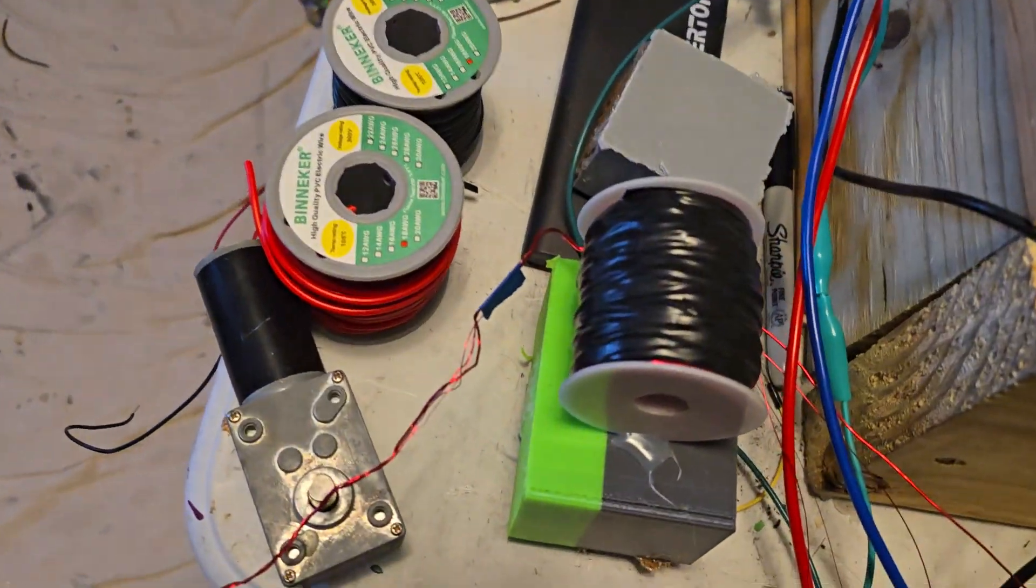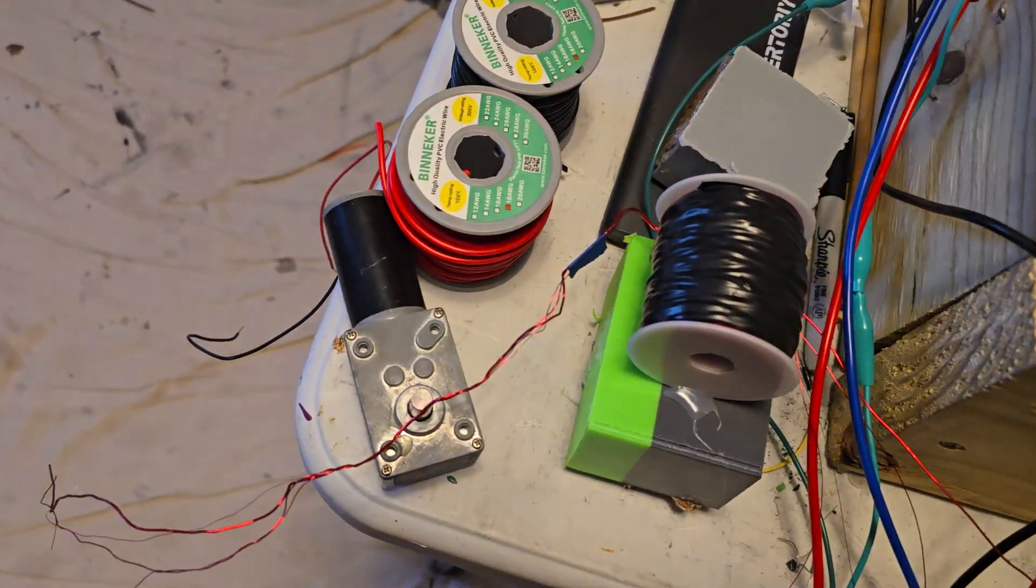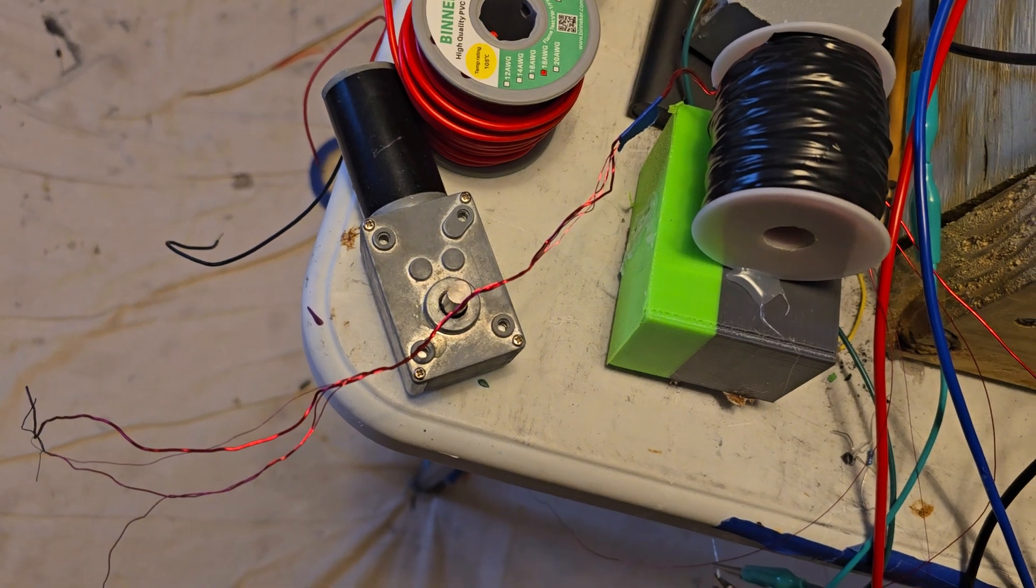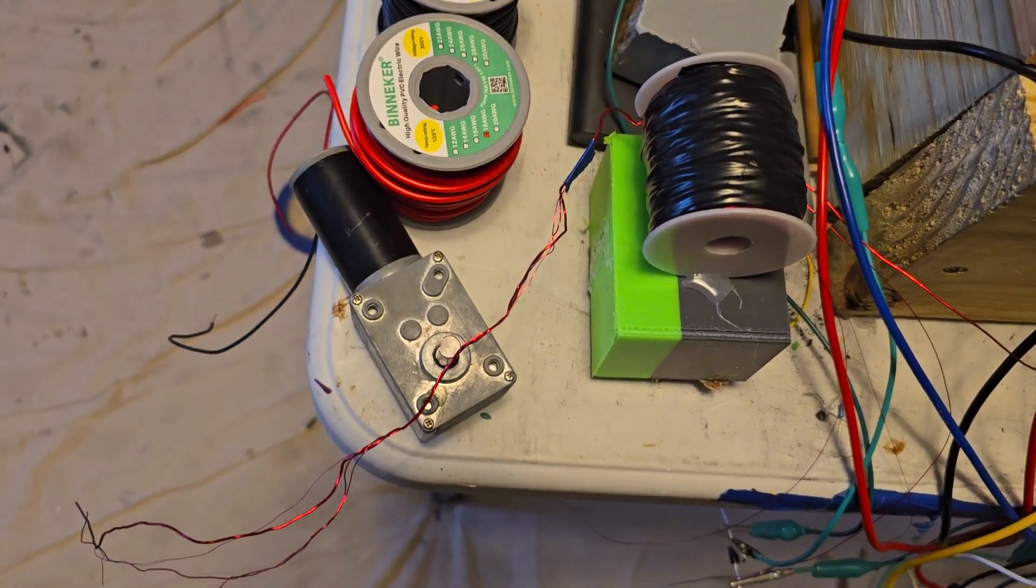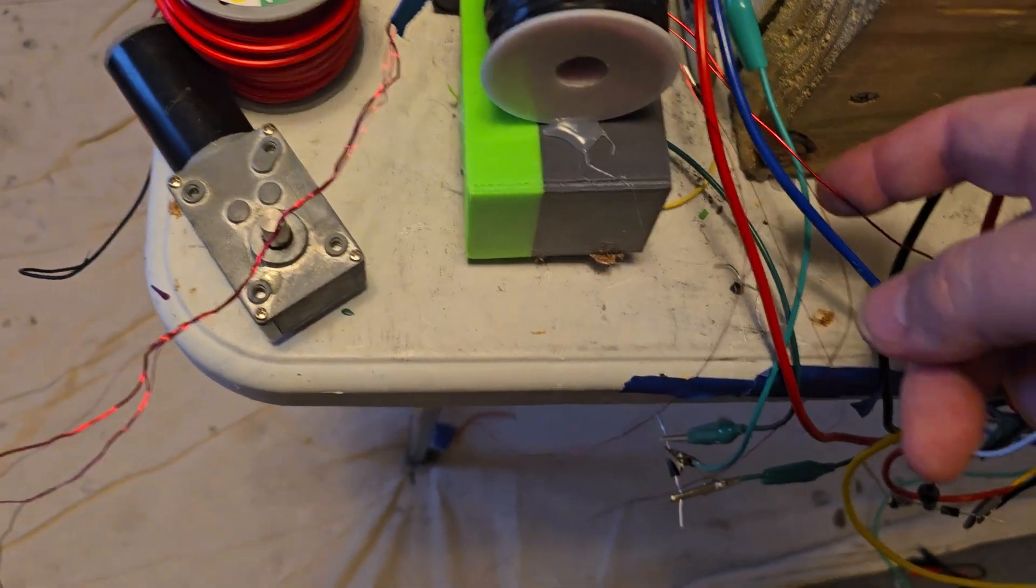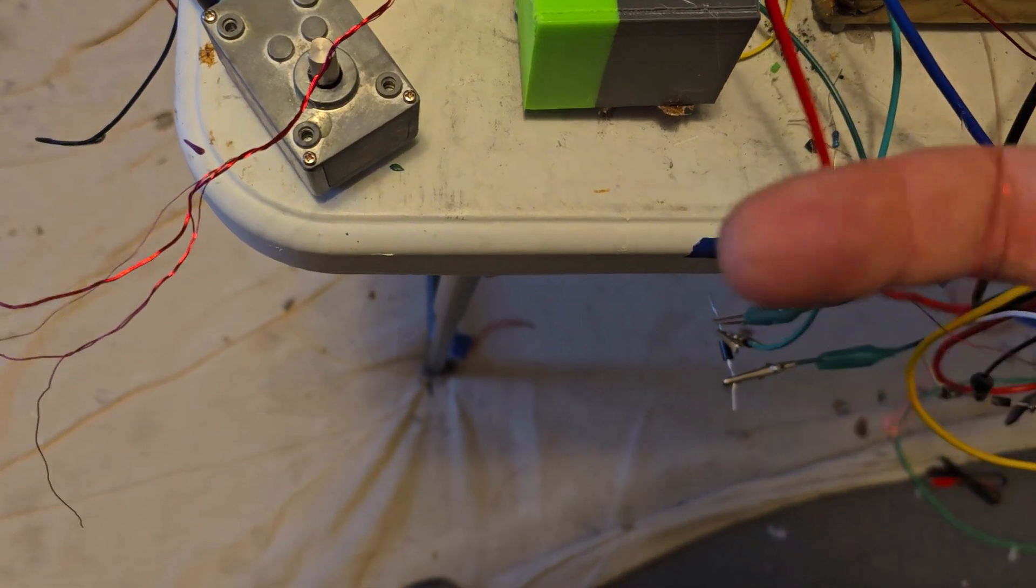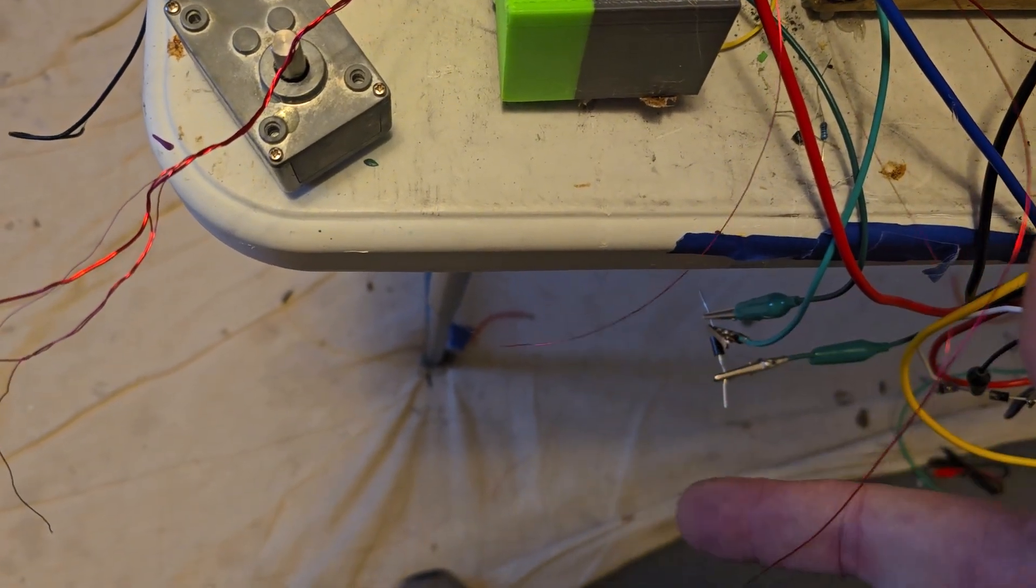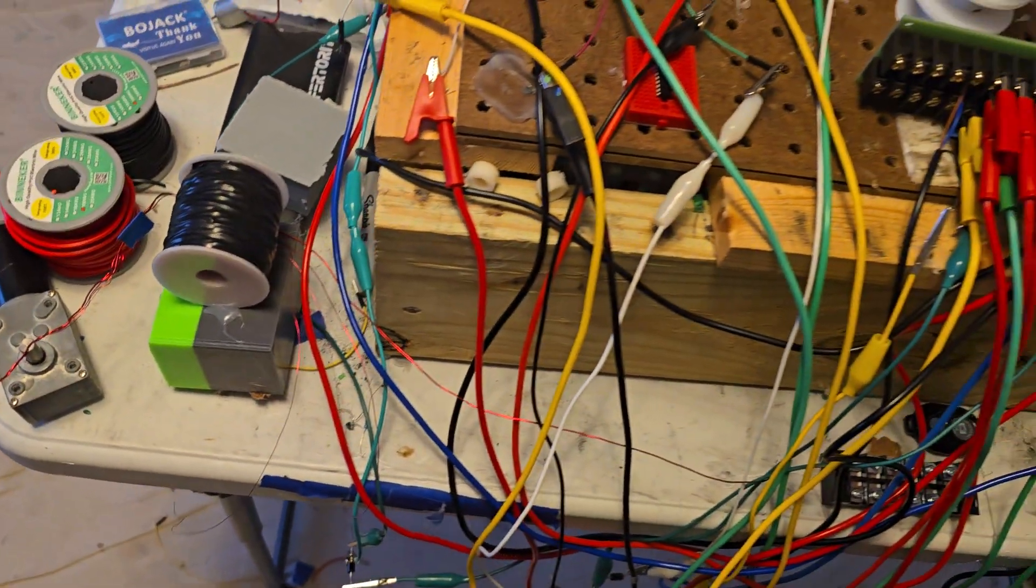Over here, this big monstrosity, I have four different wires going through it. I got a thirty two, twenty eight, twenty six and a twenty gauge. You can see them maybe over here. Yeah, they go, they whip.